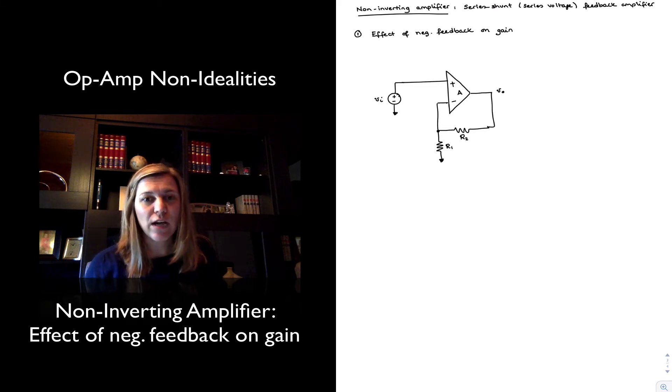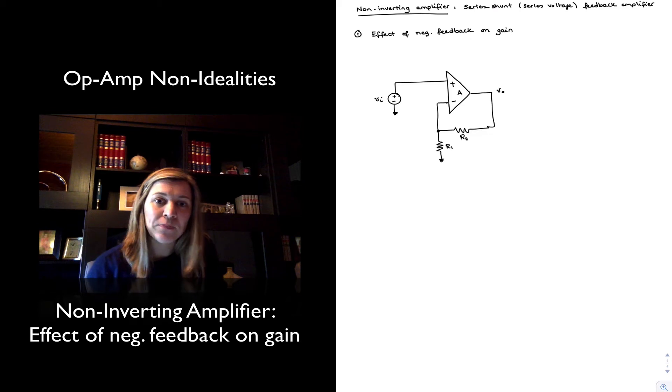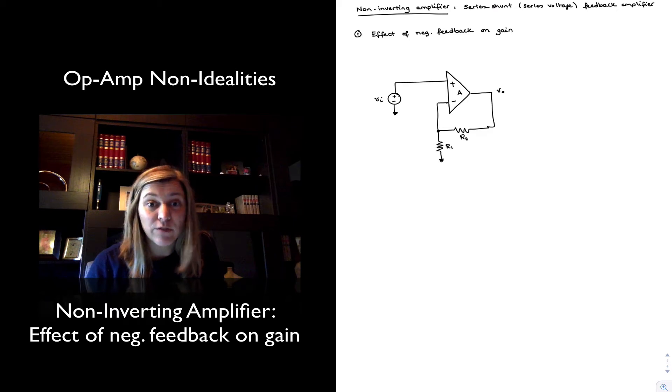We've seen already how the gain gets affected for a generic block diagram of an amplifier, but we haven't looked at any specific circuits. We're going to take the case of the non-inverting amplifier. It's a simple circuit, a voltage amplifier which exhibits a particular type of feedback configuration.